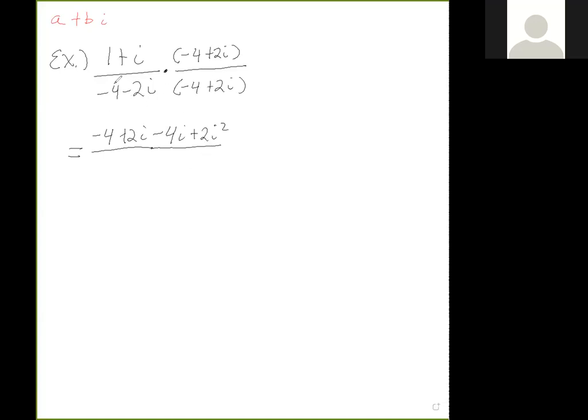What happens with the denominator? -4 times -4 is positive 16. -4 times 2 is -8, and we have the i there. -2 times -4 is +8, so that's +8i. And then -2 times 2 is -4, and then we'd have i².